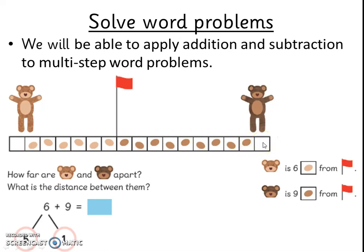Next, we will count how many steps the dark brown bear is from the flag: one, two, three, four, five, six, seven, eight, nine. The dark brown bear is nine steps away from the flag. So we write six plus nine. Then we will use the knowledge of number bonds to first make ten by breaking six into five and one, as shown in the circles. We will then make ten by adding one to the nine before adding five.